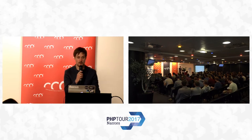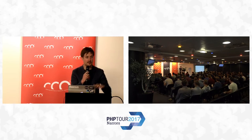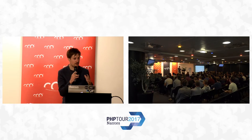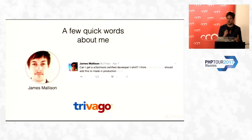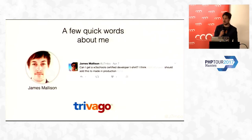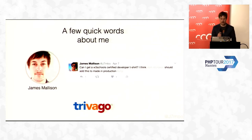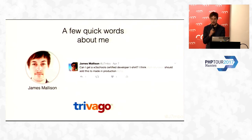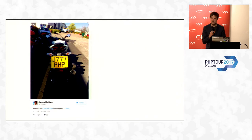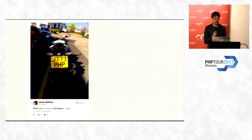Hi everyone, thanks. I've got a lot to get through. Normally this is a 50-minute talk but I've got to squish it into 45. I'm James Mallison, a software engineer from England but I now work in Mallorca with Trivago. I tweet about PHP and anything that takes the mickey out of JavaScript. I love PHP so much I got the license plate J77PHP for my bike.